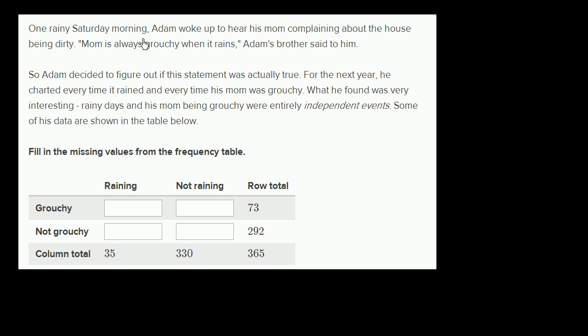One rainy Saturday morning, Adam woke up to hear his mom complaining about the house being dirty. "Mom is always grouchy when it rains," Adam's brother said to him. So Adam decided to figure out if the statement was actually true. For the next year, he charted every time it rained and every time his mom was grouchy. What he found was very interesting. Rainy days and his mom being grouchy were entirely independent events. Some of his data are shown in the table below. Fill in the missing values from the frequency table.